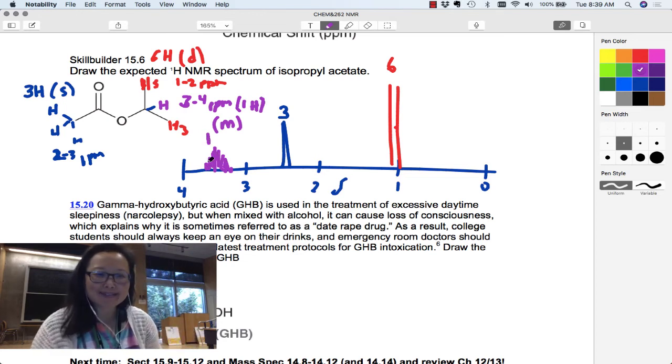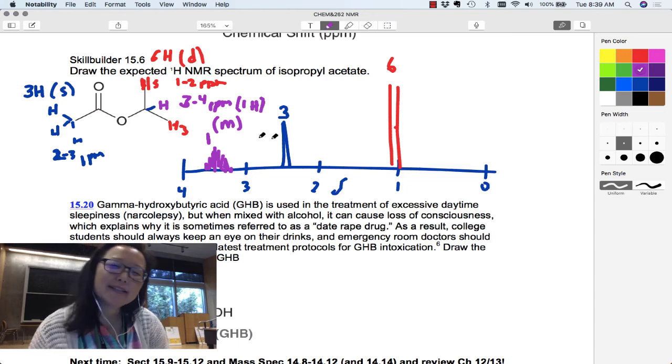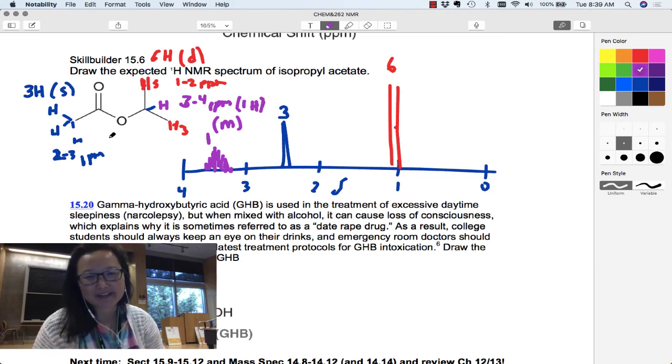And you're going to just say this is a 1H integration. And clearly, it's a mess. So M for mess or M for multiplet. All right, so that helps you because it forces you to put all the information together. So do a few like that just to get used to thinking about all those things.